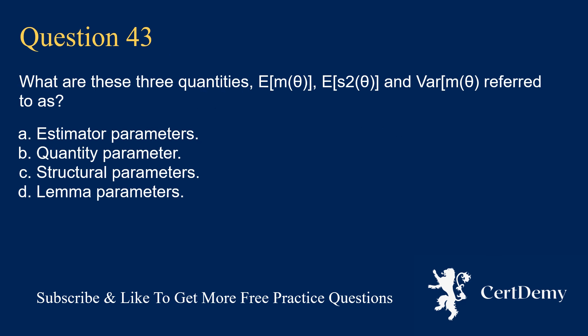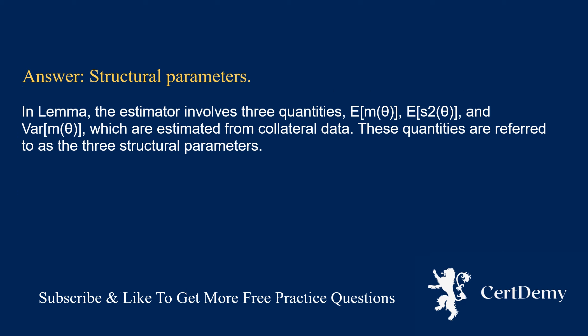Question 43. What are the three quantities E(M(Theta)), E(S²(Theta)), and Var(M(Theta)) referred to as? Options: estimator parameters; quantity parameters; structural parameters; lemma parameters. The answer is: structural parameters. In the lemma, the estimator involves three quantities E(M(Theta)), E(S²(Theta)), and Var(M(Theta)), which are estimated from collateral data. These quantities are referred to as the three structural parameters.